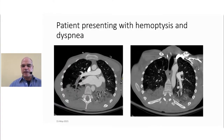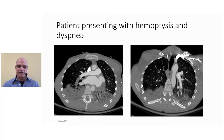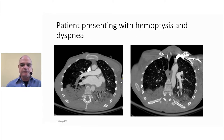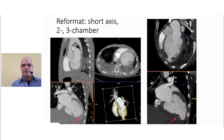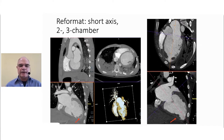I'd like to start with a clinical case. This is a patient that came in with hemoptysis and dyspnea — not really a cardiac-specific case. You can see there are multiple pulmonary emboli as well as areas of pulmonary hemorrhage. One of the major advances in CT is the ability to freeze cardiac and vascular motion, providing unparalleled detail of both vascular and lung structures. When you have a dual-source CT, every CT becomes a cardiac CT.